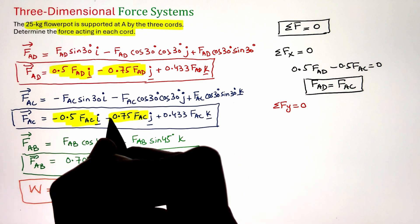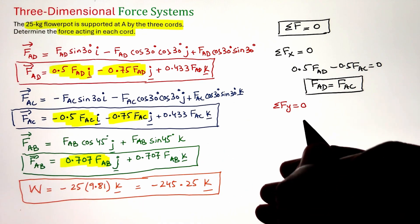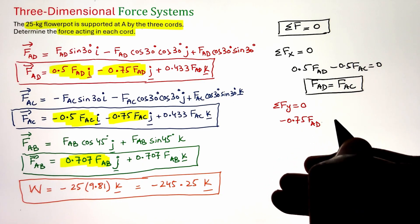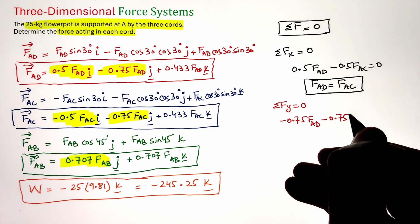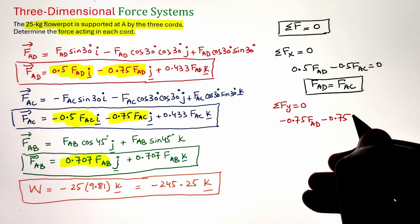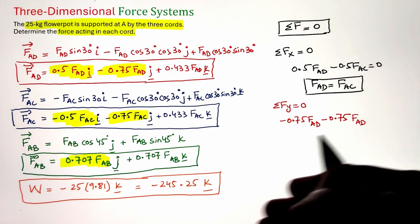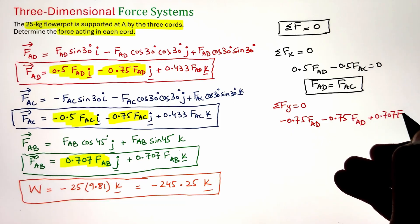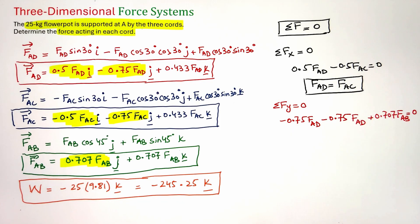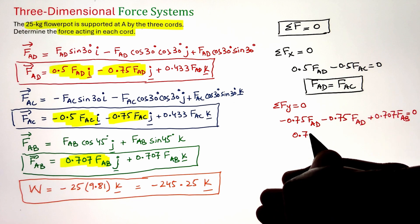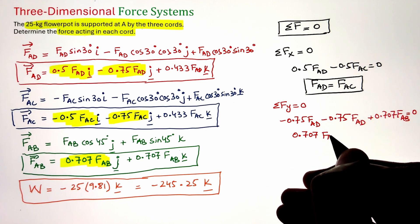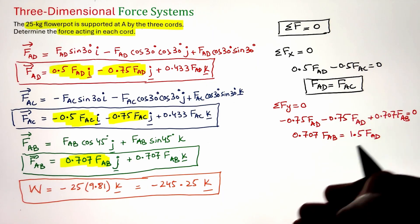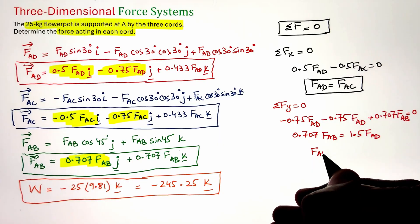Next, applying summation of forces along the y-direction equals zero, three forces have j components. Adding them: −0.75 F_AD − 0.75 F_AC + 0.707 F_AB = 0. Since F_AC = F_AD, we substitute to get a simplified form: 0.707 F_AB = 1.5 F_AD, which gives us F_AB in terms of F_AD.